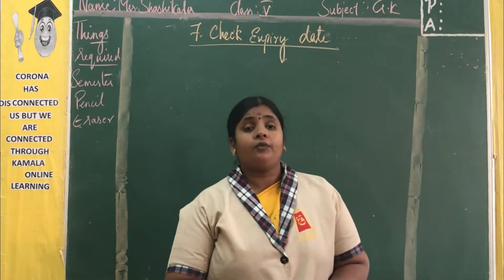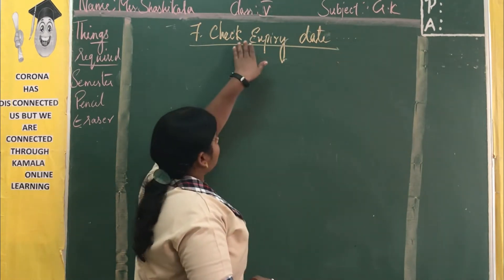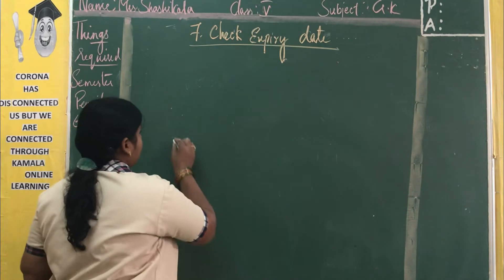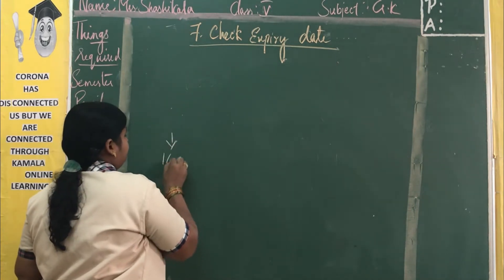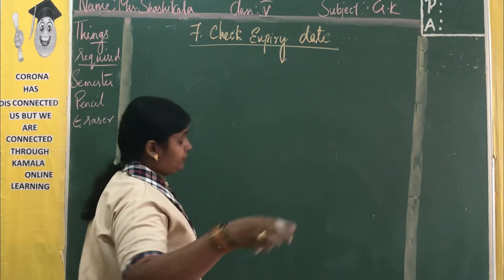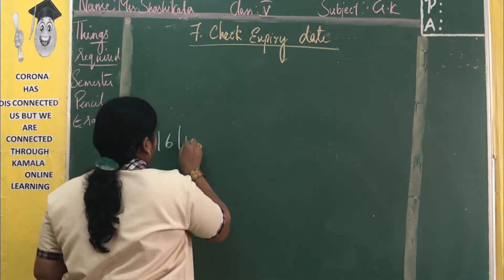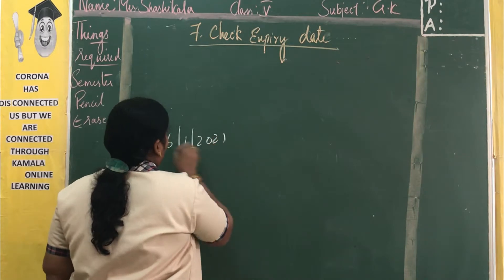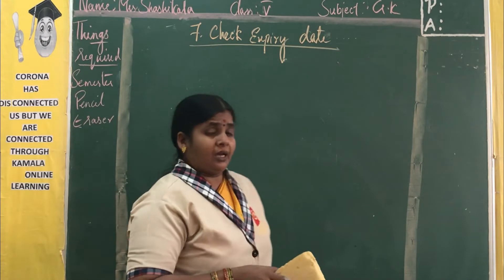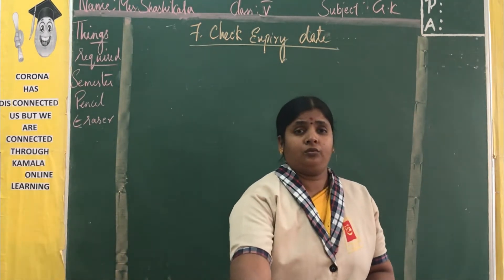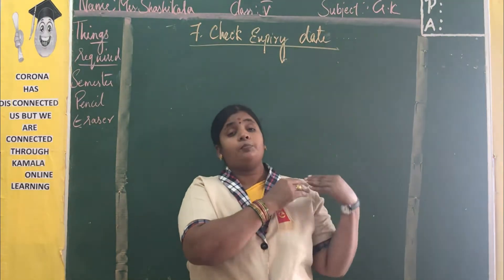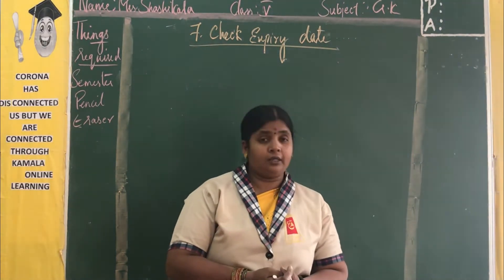We are going to topic number 7, that is 'Check Expiry Date.' What is today's date? So, this is the date. Today's date we will get tomorrow? No. The dates we have spent in previous years or previous days — those days will not come back again.